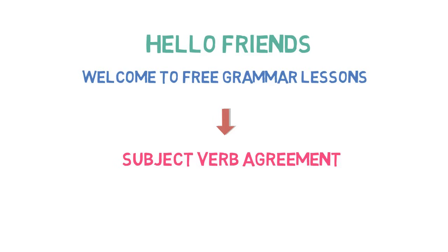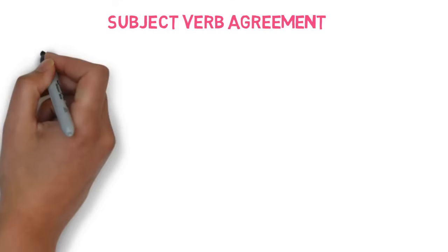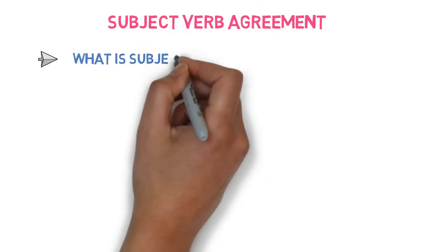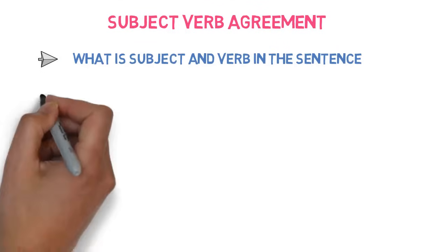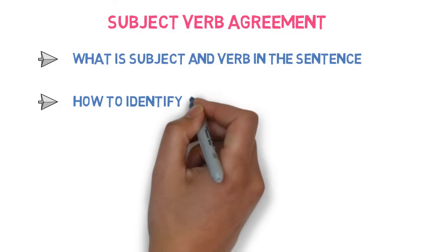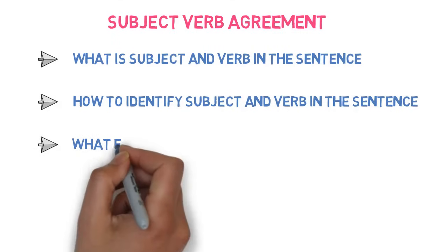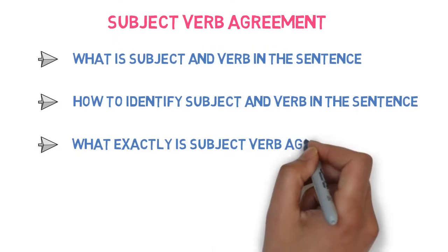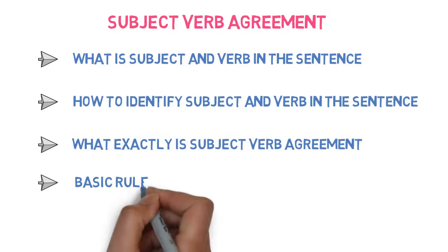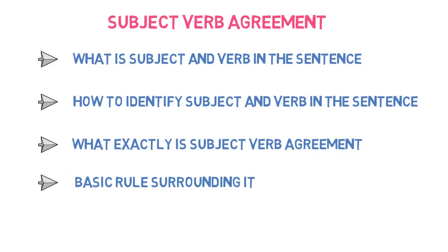Before understanding Subject-Verb Agreement, we will understand what is Subject and Verb in the sentence, and how to identify Subject and Verb in any sentence. Then we will understand what exactly is Subject-Verb Agreement and basic rule surrounding it. So, without further ado, let's get started.